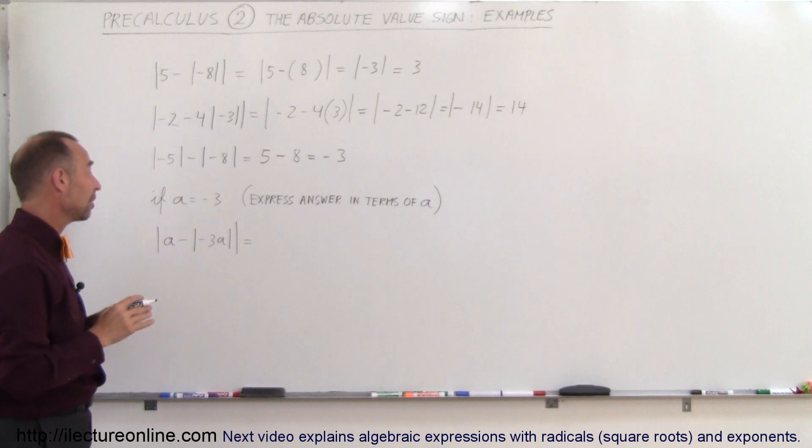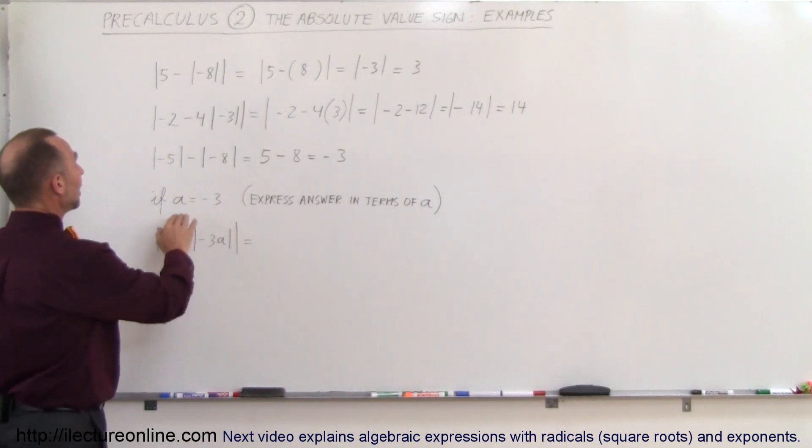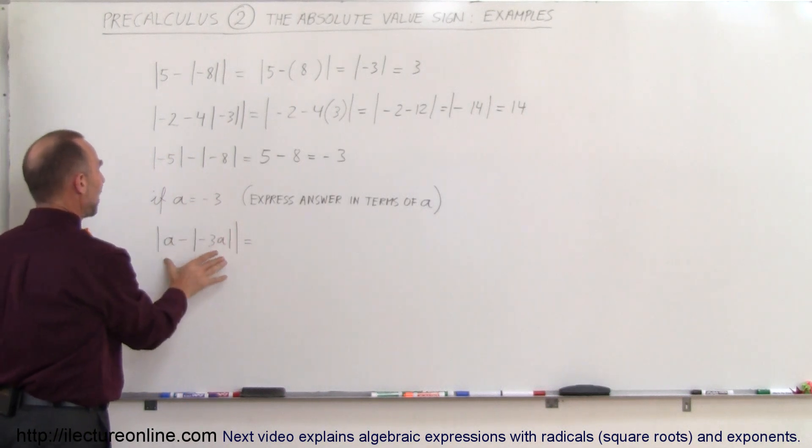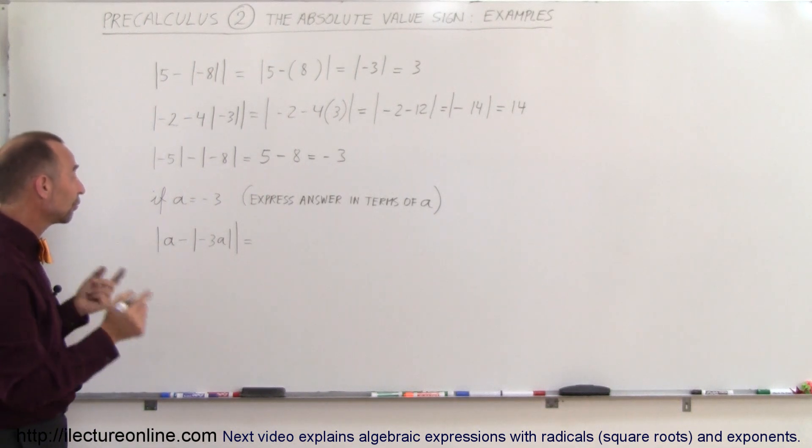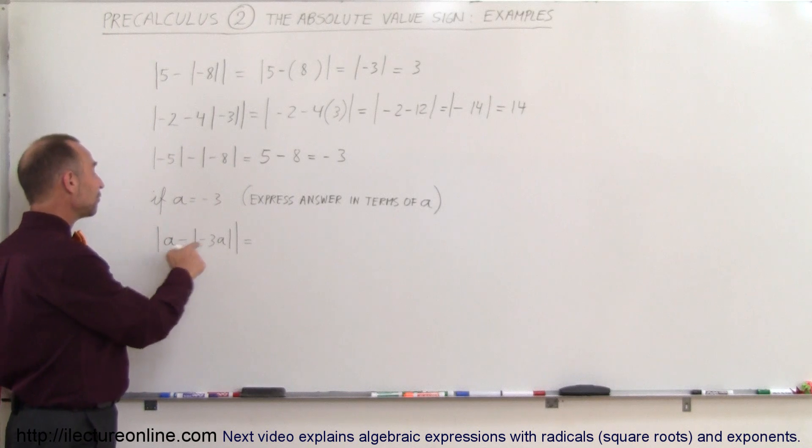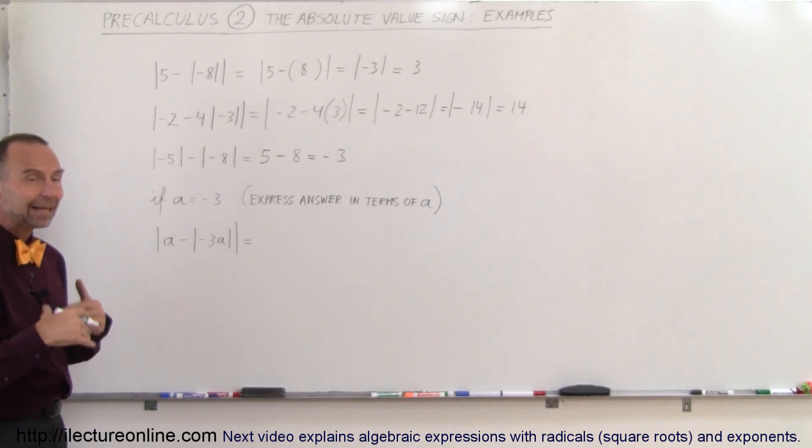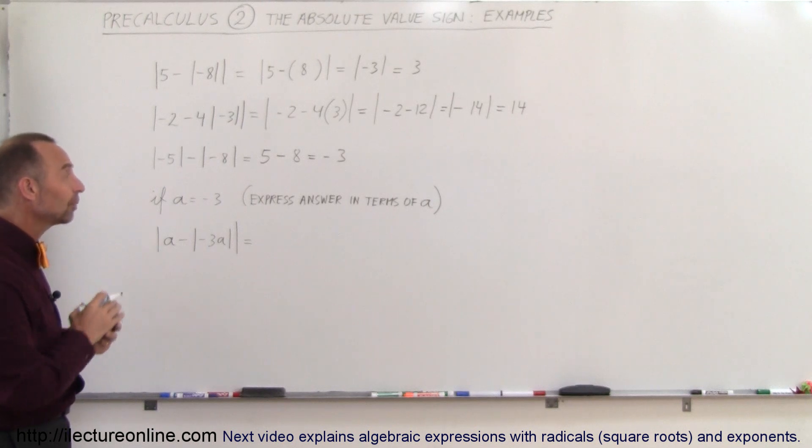Here's something that can really trip you up very easily. If a is negative 3, evaluate this and express your answer in terms of a. What I would recommend is first substitute minus 3 for a in this expression, and then solve that, and then turn it back into something in terms of a.